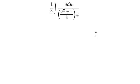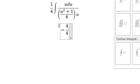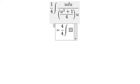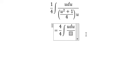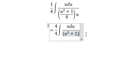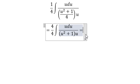Next, we simplify the numbers. 4 divided by 4 equals 1, u divided by u equals 1. So we get du over u² plus 1.